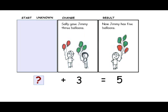We can also look at the scenario where the start is unknown. Jimmy has some balloons, then Sally gave him three balloons, and now he has five balloons. The unknown start answers the question, how many balloons did Jimmy start with?